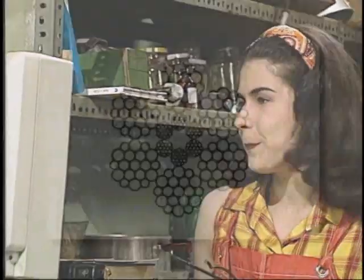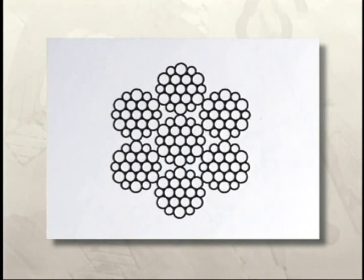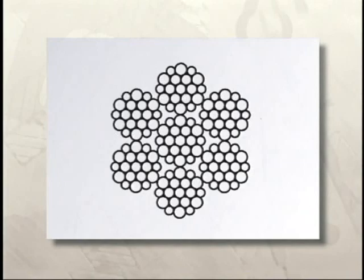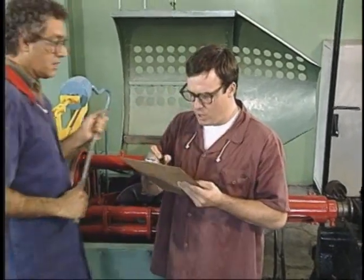A alma de algodão é somente utilizada em cabos de pequenas dimensões. A alma de asbesto, que é um tipo de mineral fibroso, é utilizada em cabos sujeitos a altas temperaturas. A alma de aço pode ser formada por uma perna de cabo ou por um cabo de aço independente. Esse cabo de aço independente oferece maior flexibilidade somada à alta resistência à tração.